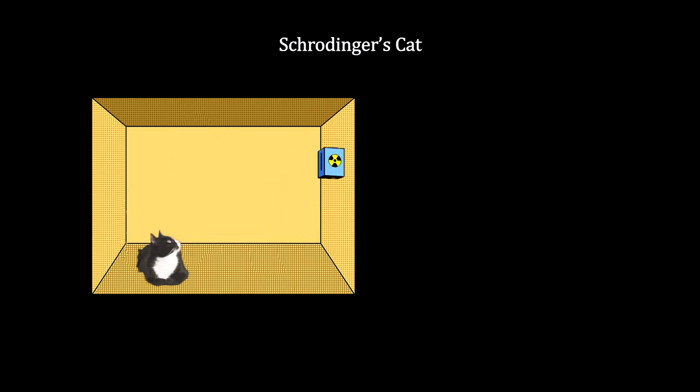He added a Geiger counter to detect the decay should it happen. The Geiger counter is hooked up to a lever that drops a weight on a glass bottle of hydrocyanic acid should it detect the decay. The released poison gas kills the cat.